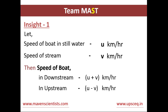So let's see the first insight. Let's say the speed of the boat in still water is u kilometers per hour and the speed of the stream equals v kilometers per hour. Then the speed of the boat downstream will be u plus v kilometers per hour, and the speed of the boat upstream will be u minus v kilometers per hour.